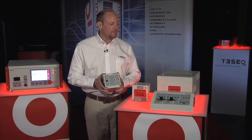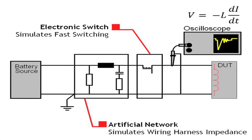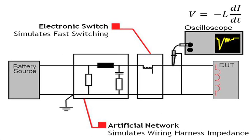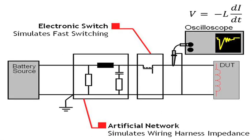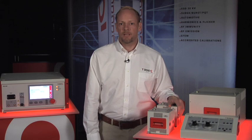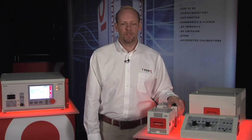The AES-5501 creates the reference set of conditions for measuring transient emissions from automotive electrical loads during switching operations. The types of DUTs are electronic loads in the vehicle like radios, controllers, electrical motors and pumps — basically any kind of electronic component in the vehicle.